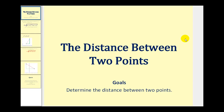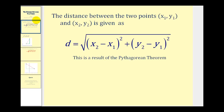Welcome to a lesson on how to determine the distance between two points. The distance between two points, x sub one, y sub one, and x sub two, y sub two, is given as d equals the square root of the quantity x two minus x one squared plus the quantity y two minus y one squared.